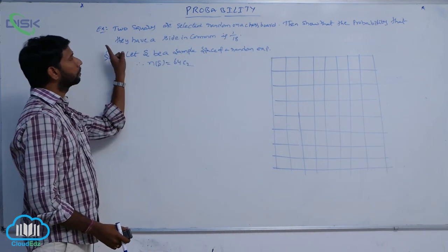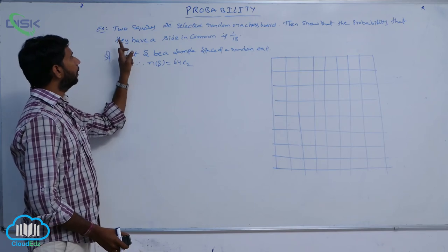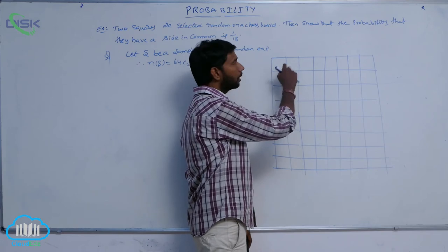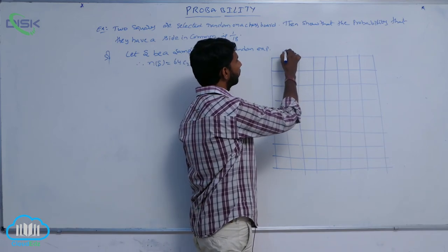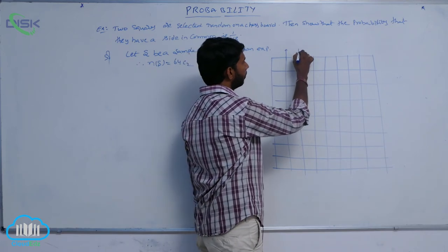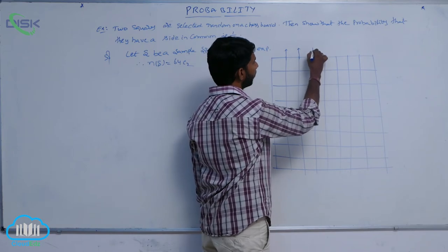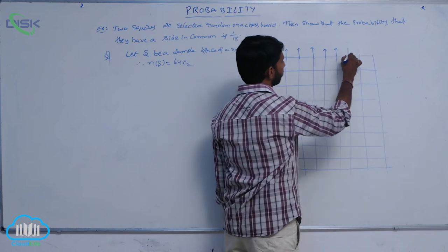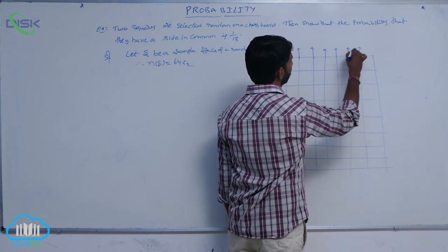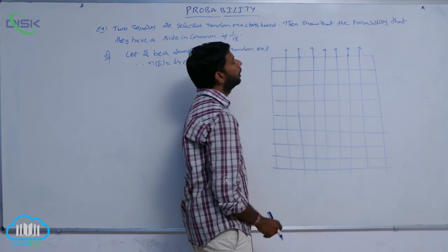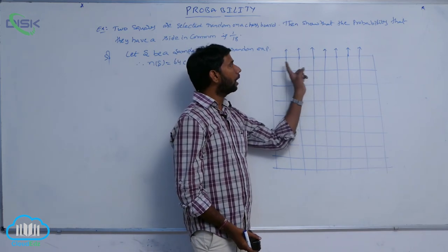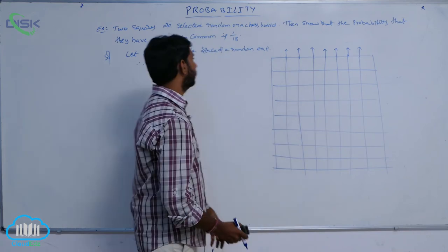The given condition is the probability that they have a side in common. If two squares having a common side is this one, and two squares having a common side is this one, those are the common sides of the chessboard. Here common sides are 7. Out of 8 squares, the common sides are 7.